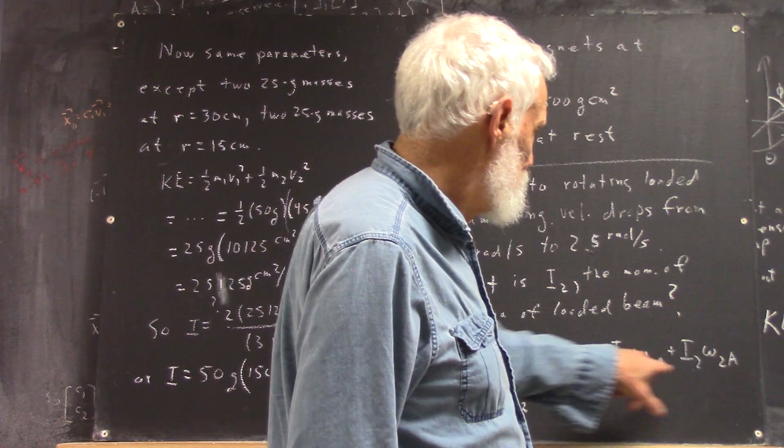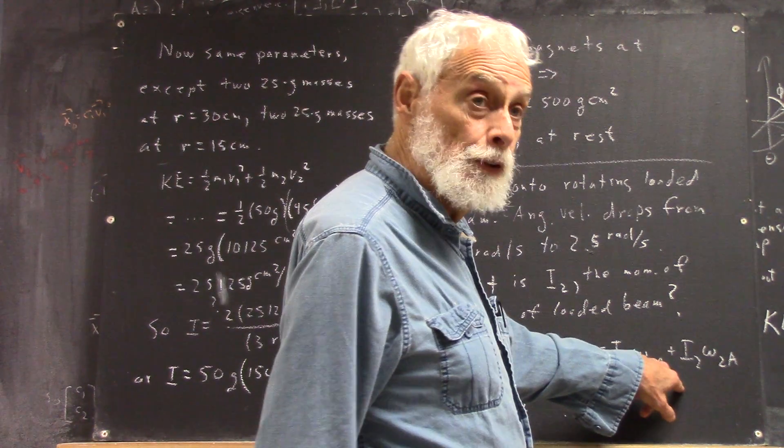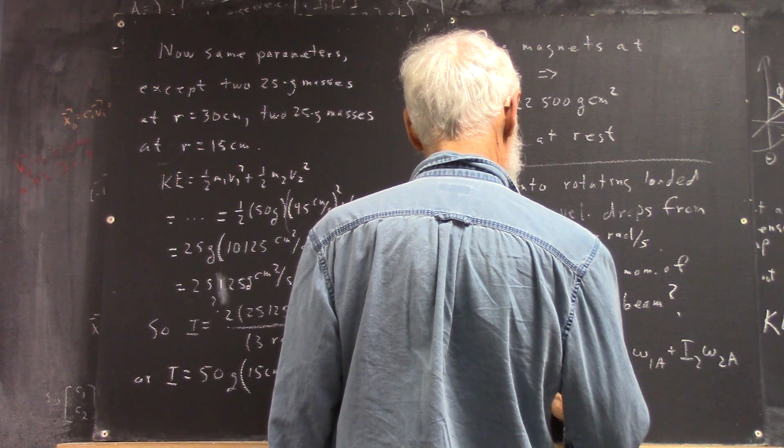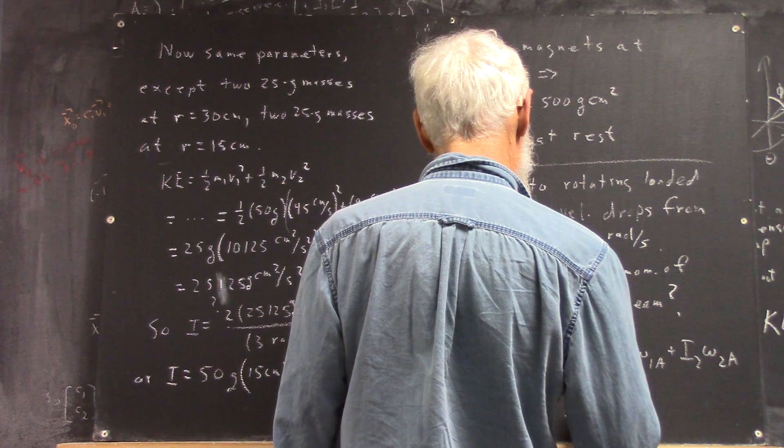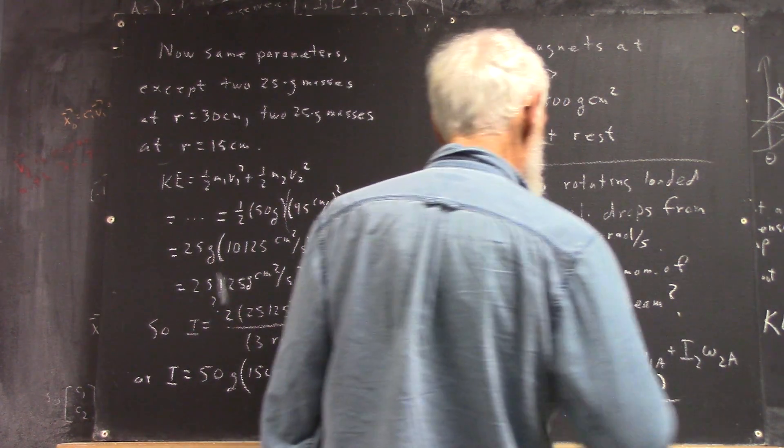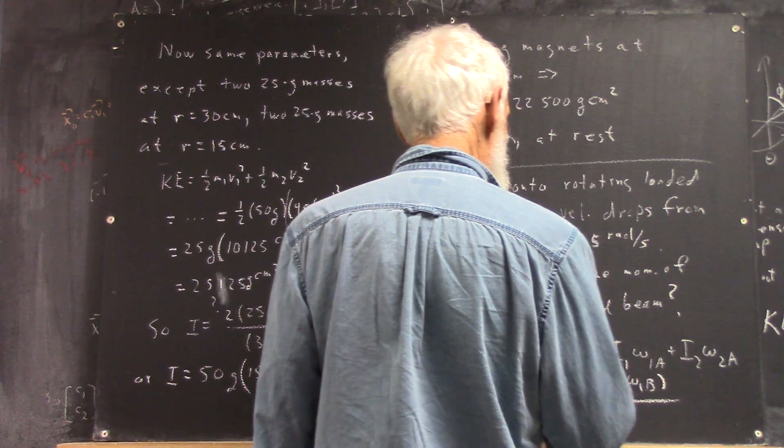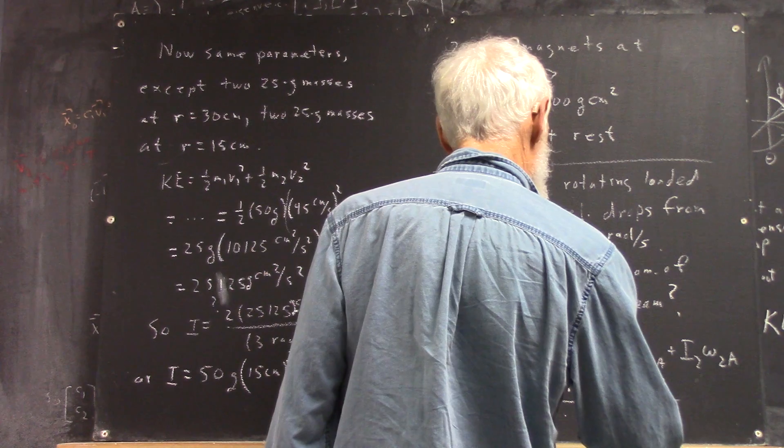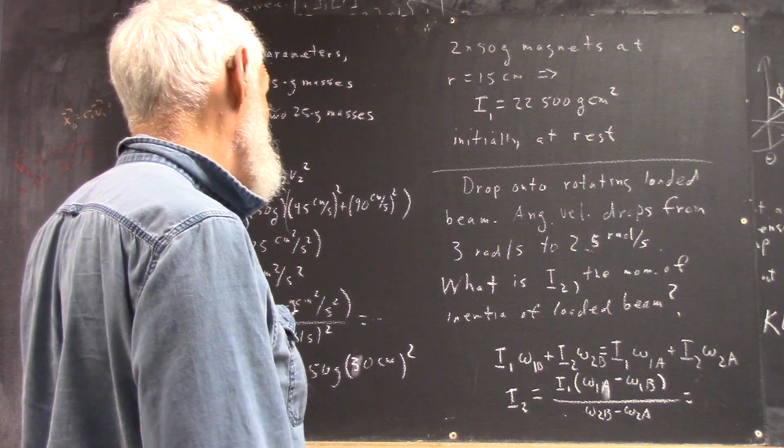To get I2, subtract this from both sides to get your I2s over here, and subtract this from both sides to get the only stuff over there. You're going to get I1 multiplied by omega 1a minus omega 1b. There would be reason to write it the other way, but I don't want to confuse myself or you. And that's going to be divided by, when you factor the I2 out, you're going to have omega 2b minus omega 2a, right? I think so.